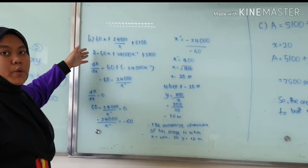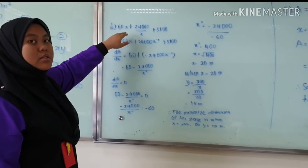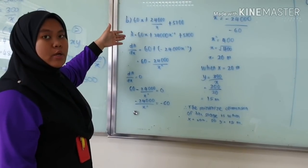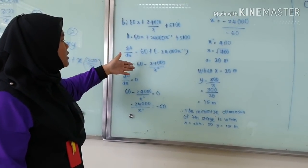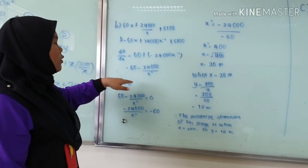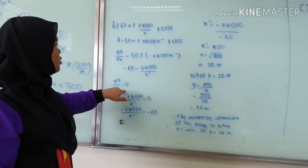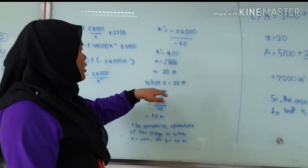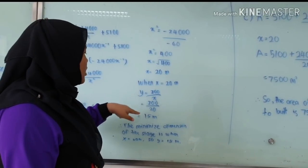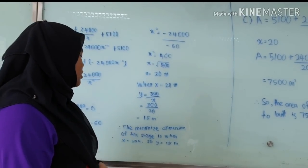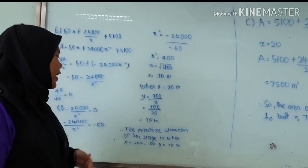This is the equation for the combined area of the stage. The equation must be derived to get the value of 60 minus 24,000 over X squared. The equation must be equal to zero to get the value of X equal to 20 meters. Substitute the value of X into the equation of Y. The value of Y is 15 meters. Therefore, the minimized dimension of the stage is when X equals 20 meters and Y equals 15 meters.